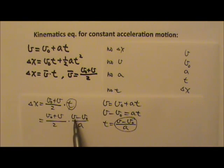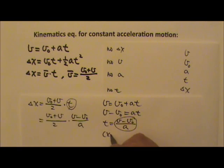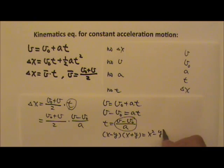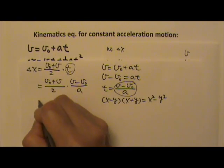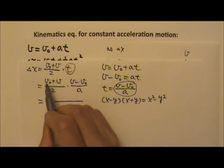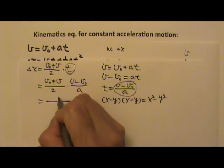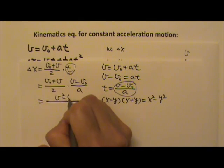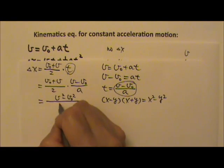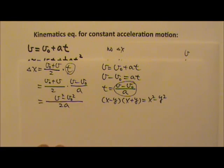So here, in the numerator, I have x minus y times x plus y. Do you remember what that gives you? This gives you x squared minus y squared. So if you use that, you will get x squared minus y squared. So v squared minus v₀ squared. And in the denominator, you have 2a.